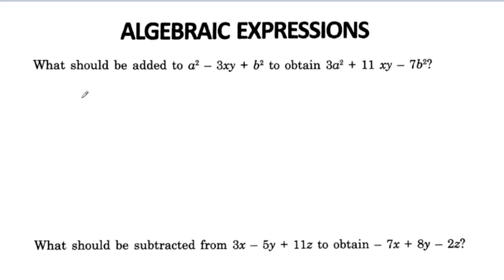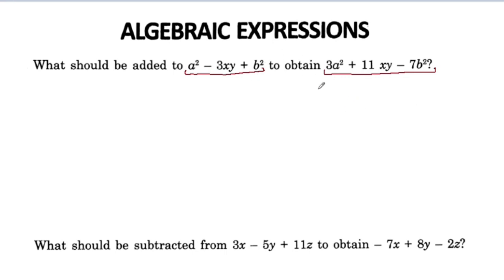What should be added to a²-3xy-b² to obtain 3a²-11xy-7b²? We will use a symbol for what we need to add to get 3a²-11xy-7b².